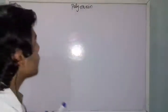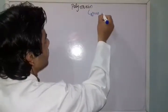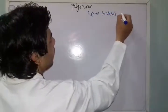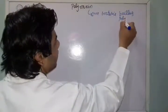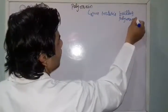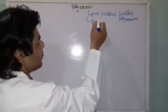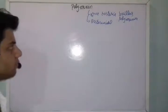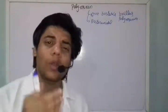These polymyxins are actually produced by gram-positive bacteria, and we call that Bacillus polymixa. These drugs are actually bactericidal in nature, meaning that they can kill bacteria.